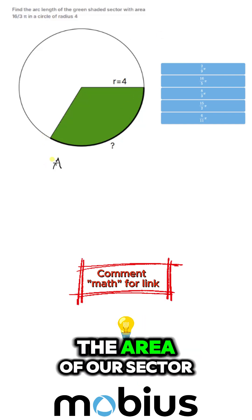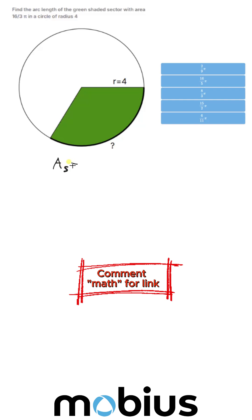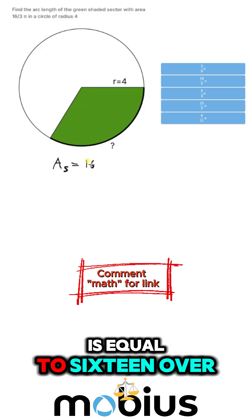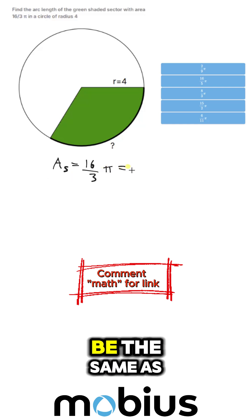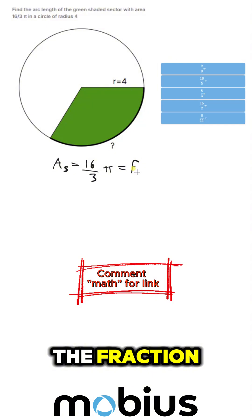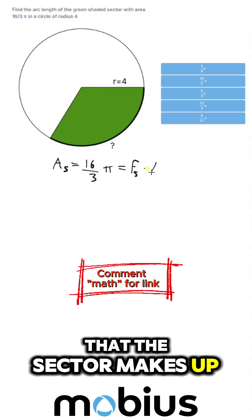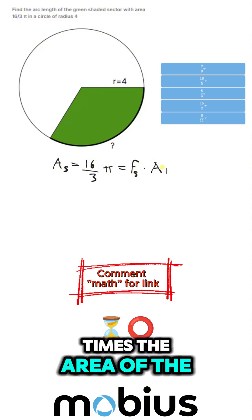So we know that the area of our sector is equal to 16 over 3 pi. And so that's going to be the same as the fraction that the sector makes up times the area of the full circle.